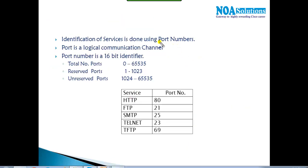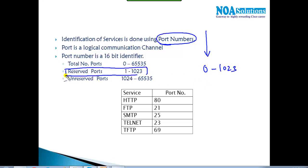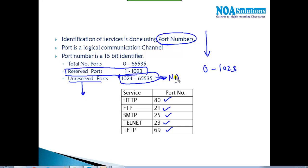Each protocol is identified by different port numbers. Each service is identified with a specific port number. Port numbers from 0 to 1023 are reserved for specific applications: HTTP is on port 80, FTP on port 21, SMTP on port 25, Telnet on port 23, and TFTP on port 69. Unreserved port numbers can be used for hosting custom services, similar to how NAT uses different port numbers for translations.